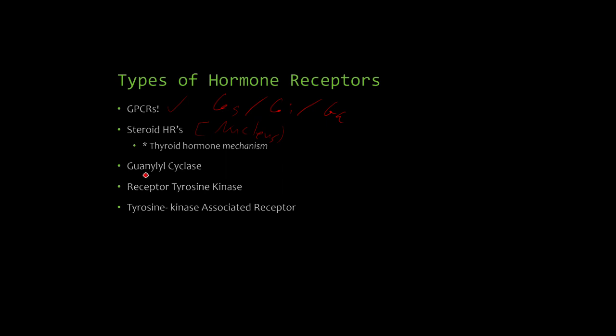Don't get these two classes of receptors confused, because GPCRs are its own unique class. And all this class is saying is that there's a couple hormones that bind to a receptor that's linked to this enzyme specifically, okay? So they're different classes.